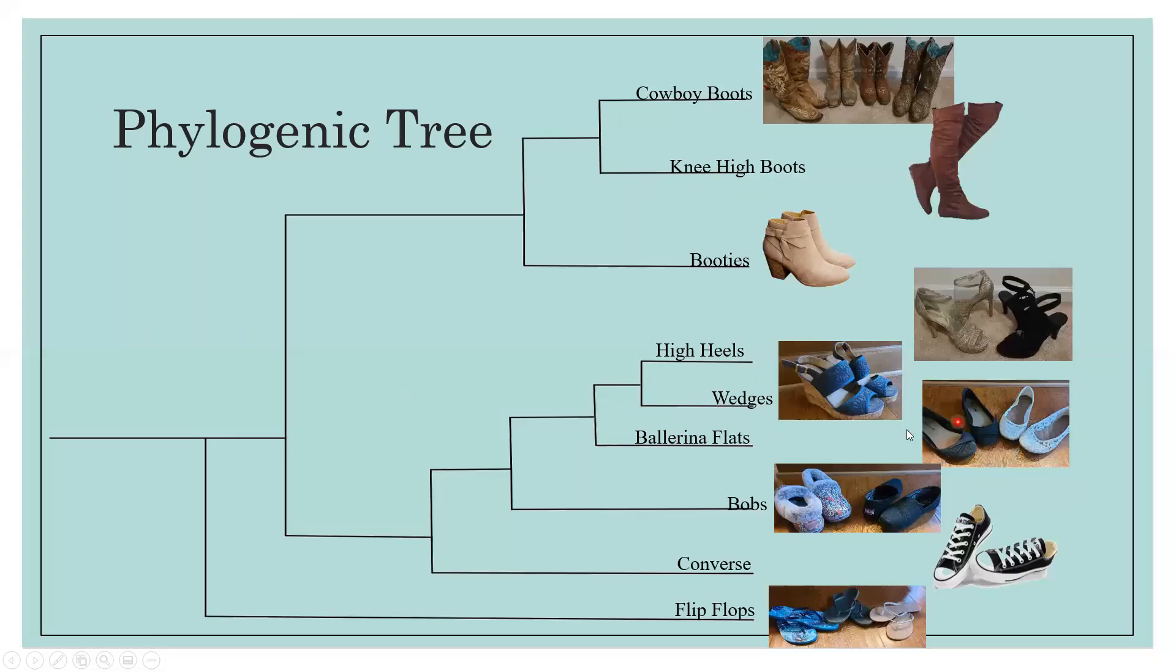We're able to tell the OTUs of the tree and the order of this tree because it is rooted, meaning that we know the common ancestors between the species so we can tell the order and length of the branches. Common ancestors here, here.